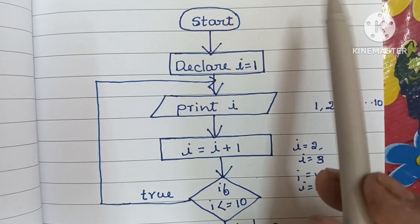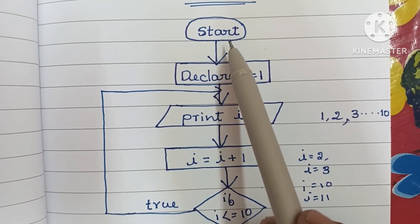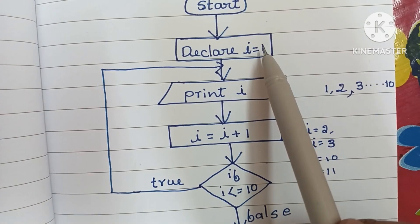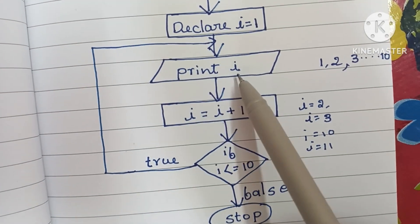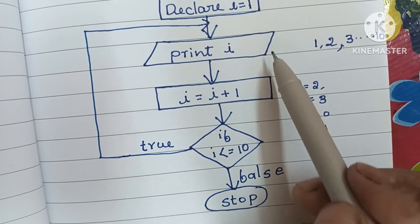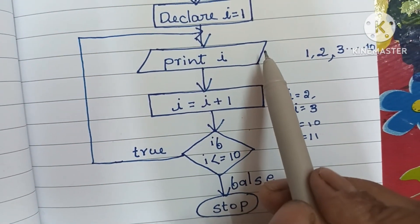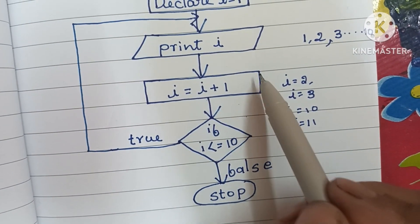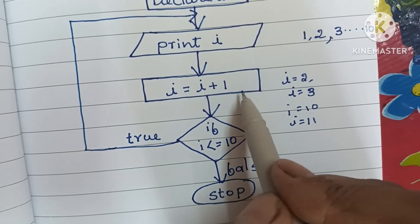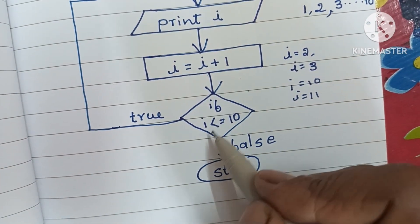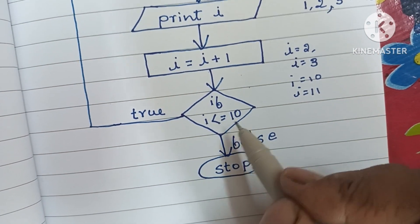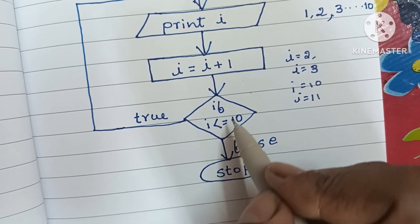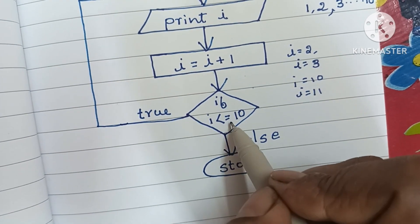So this is the flowchart to print numbers from 1 to 10. It starts with the start statement. Next we declare the i value equal to 1 — declaration is done within a rectangular shape. Next we print the value of i — output is written within a parallelogram shape. Next we increase the value of i, that is i equals i plus 1, written within a rectangular shape. Then we check if i is less than or equal to 10 — the condition is always written within a diamond shape.